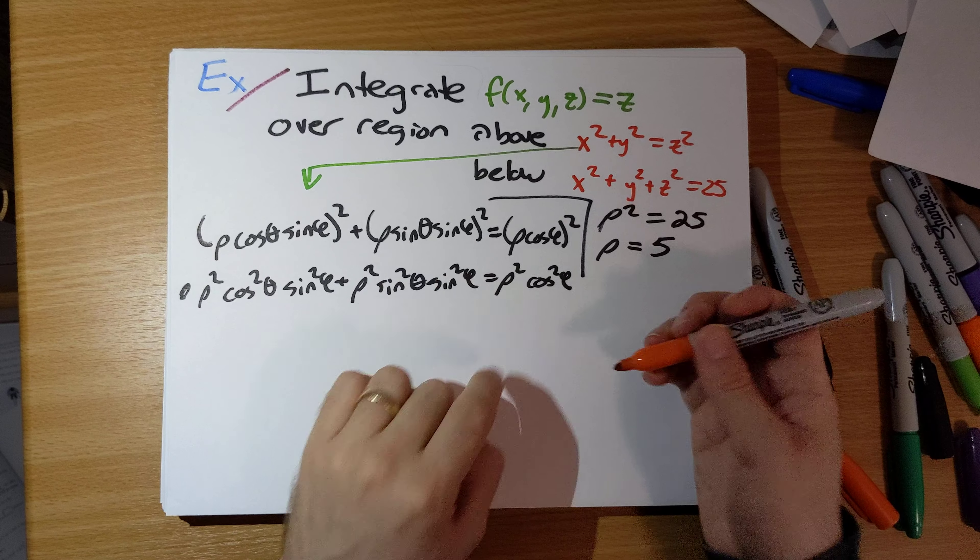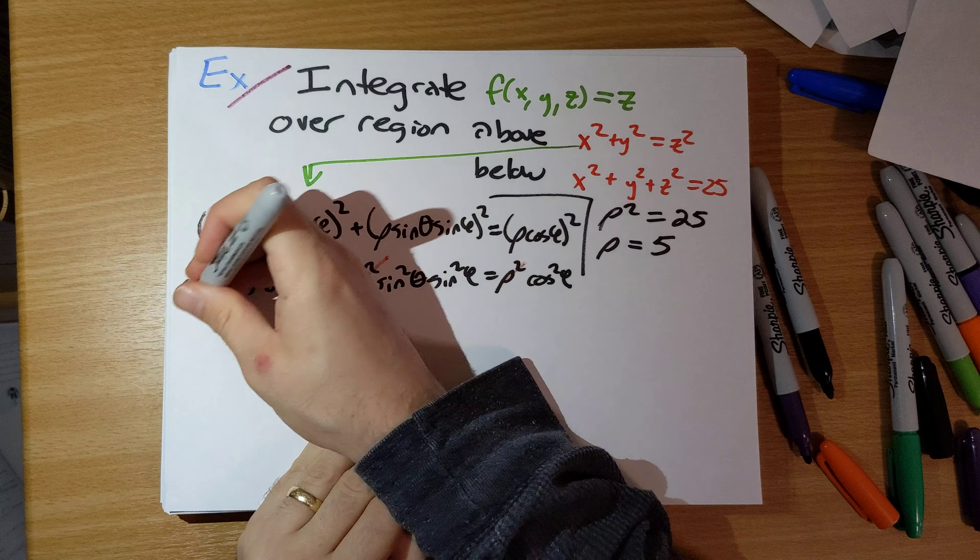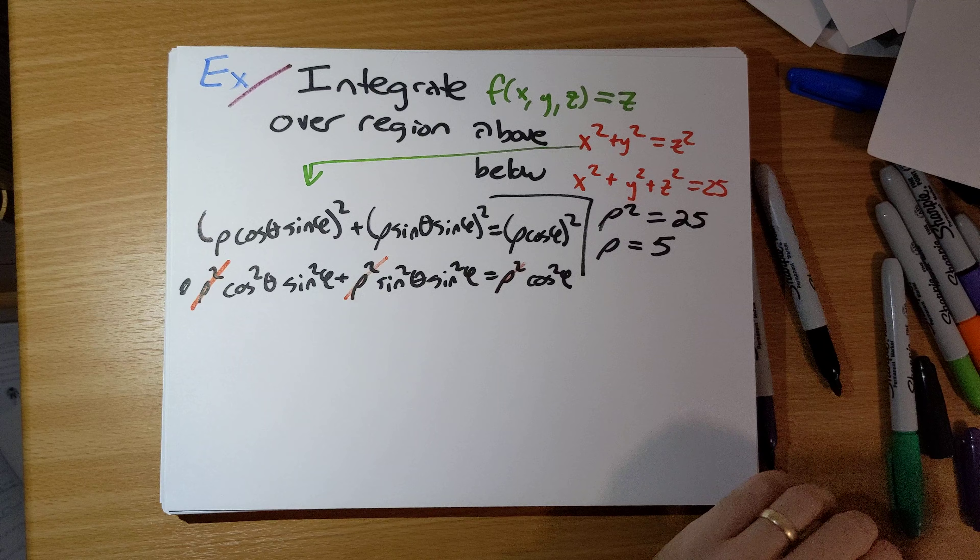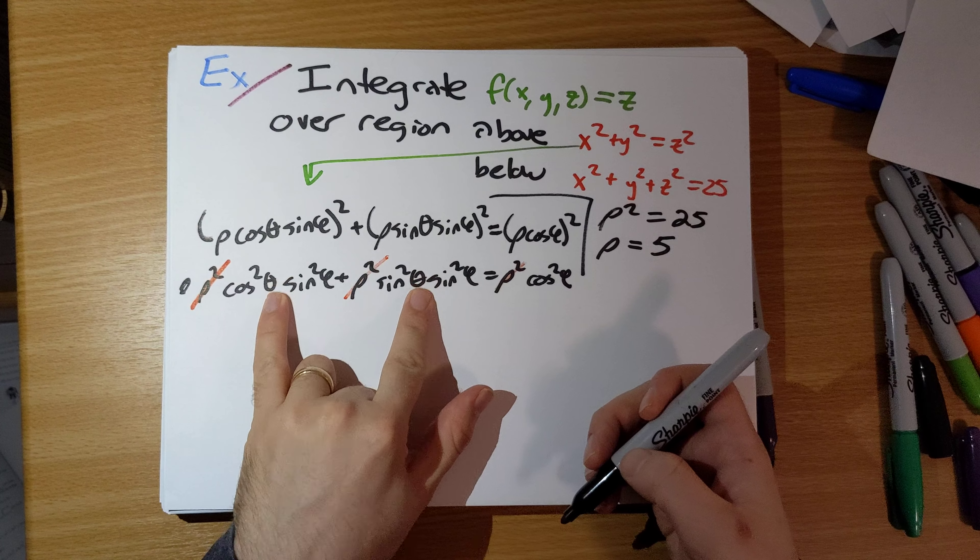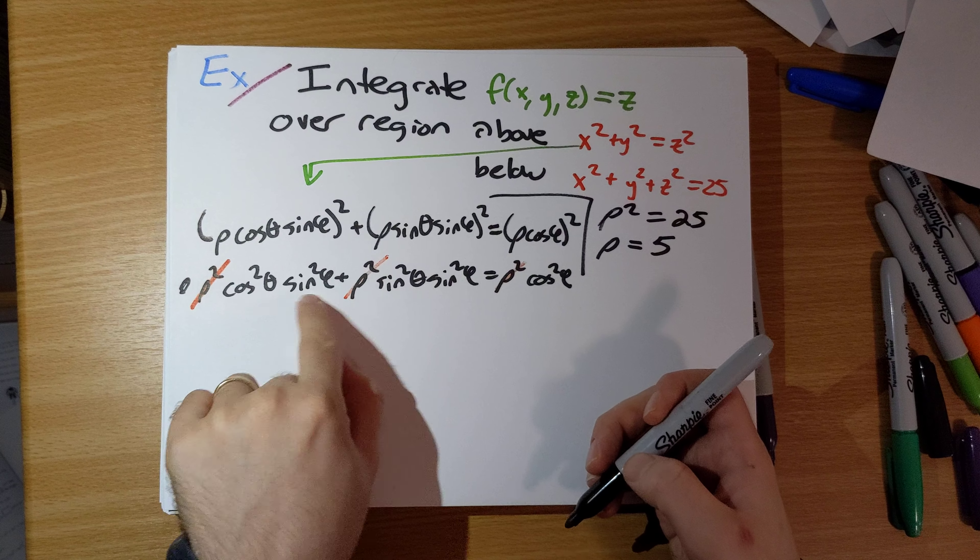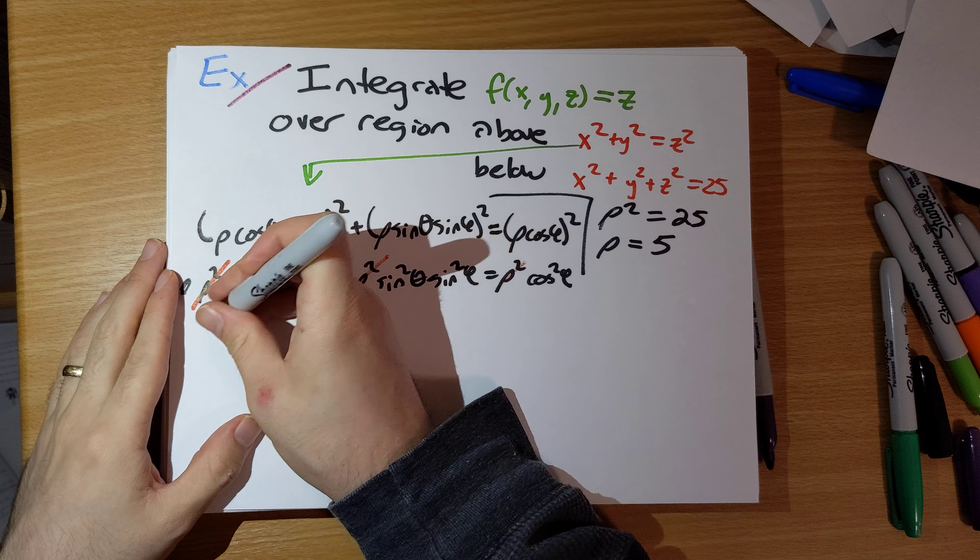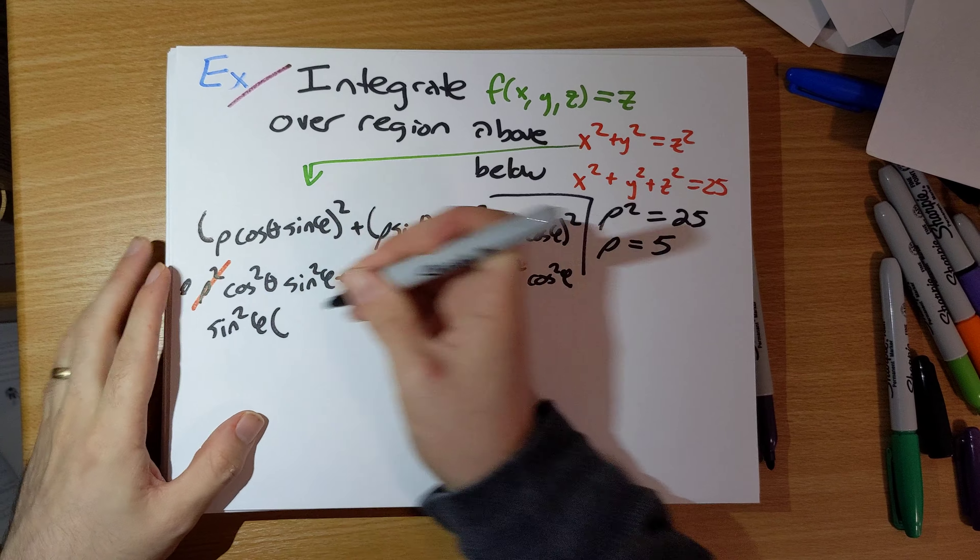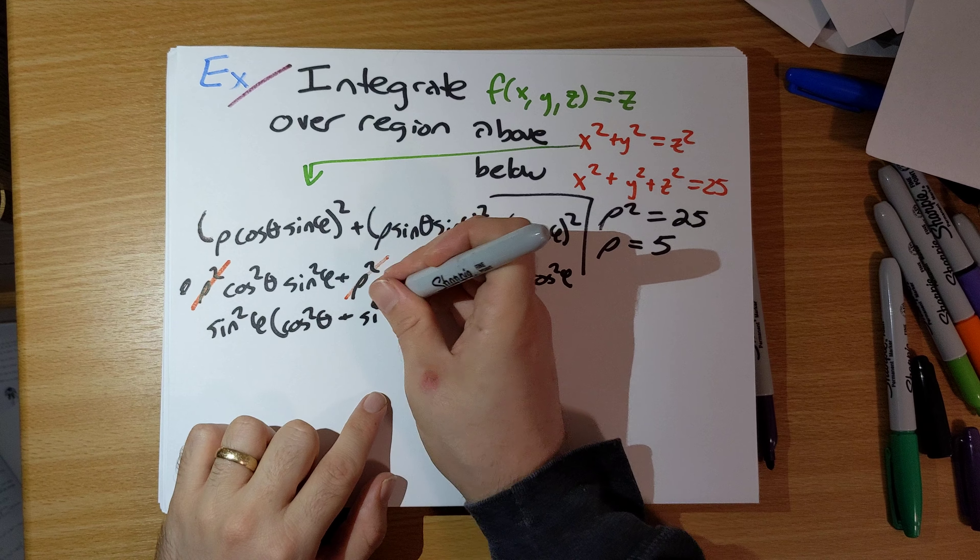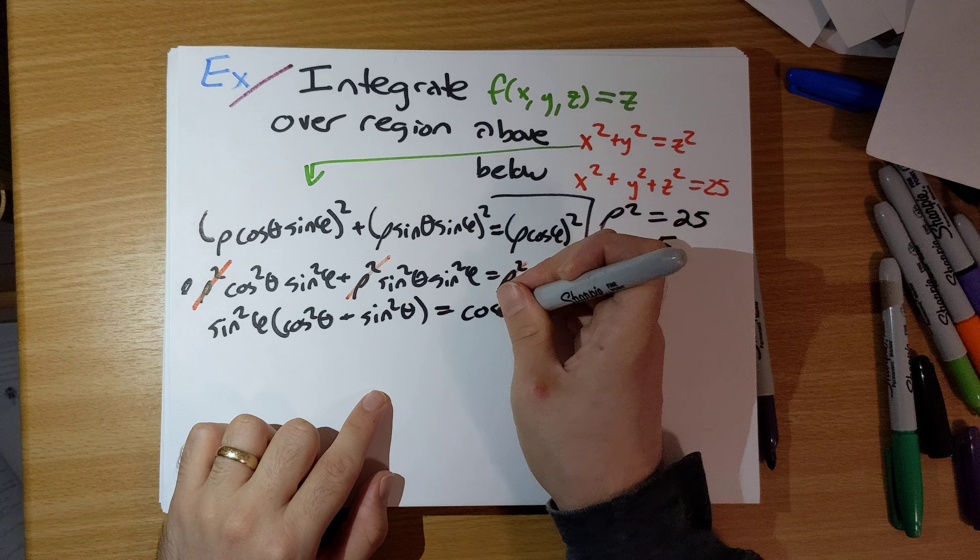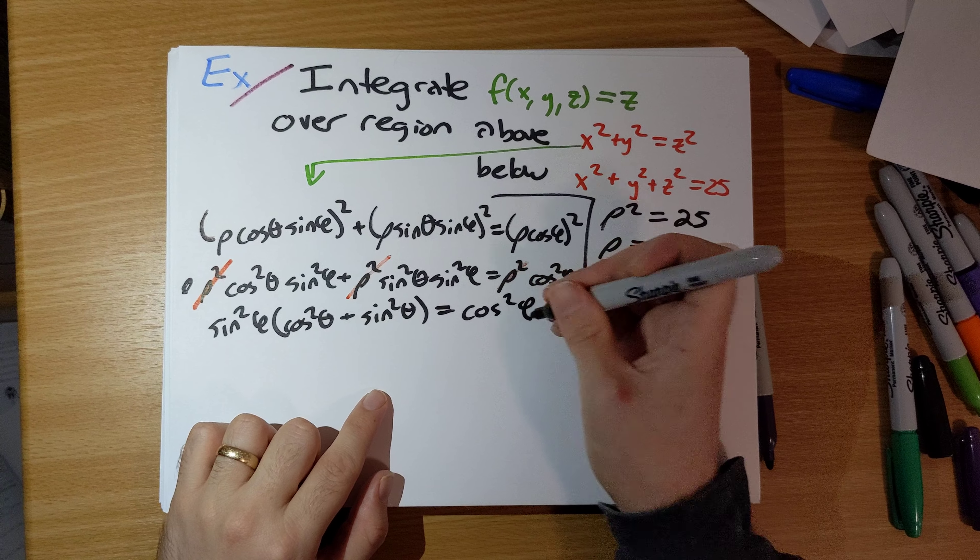There is a rho squared in every term here. So let's cancel those out. And note, on the left here, we have sine squared phi in both of these terms times cosine squared theta plus sine squared theta equals cosine squared phi.